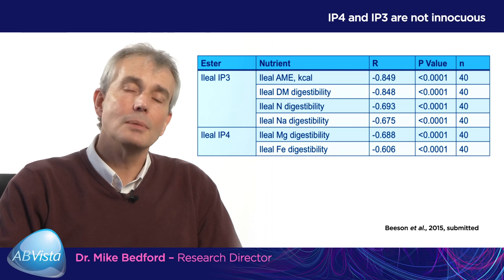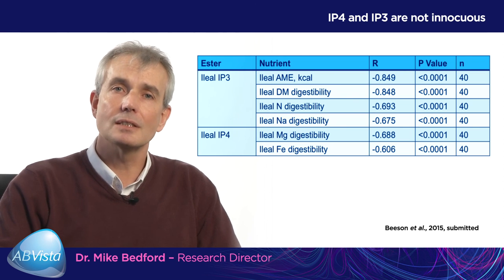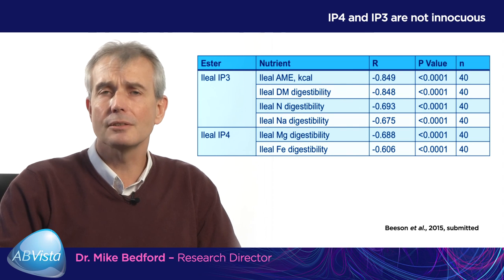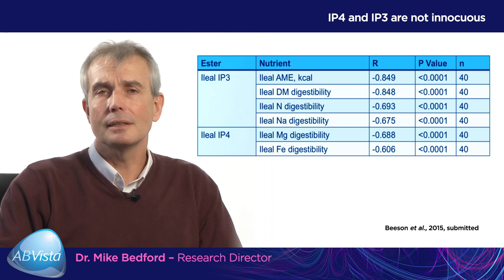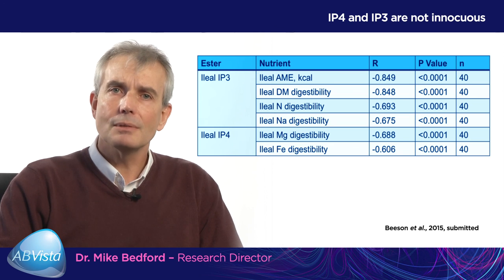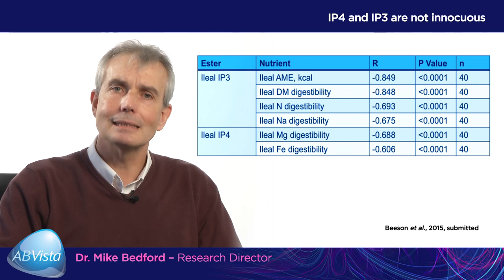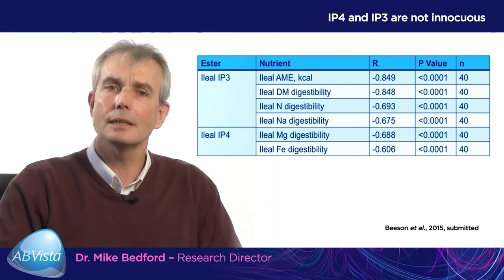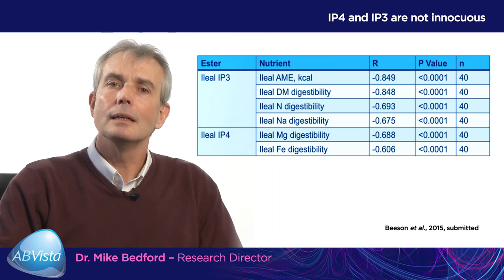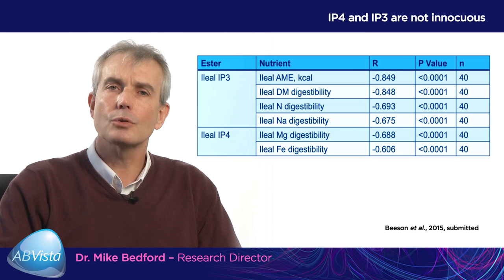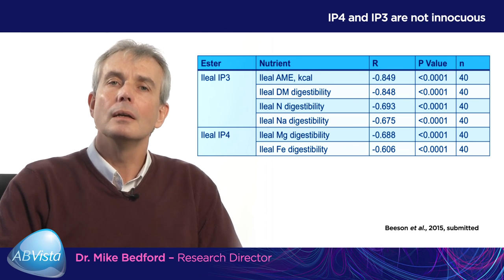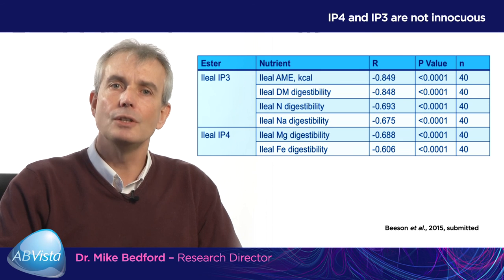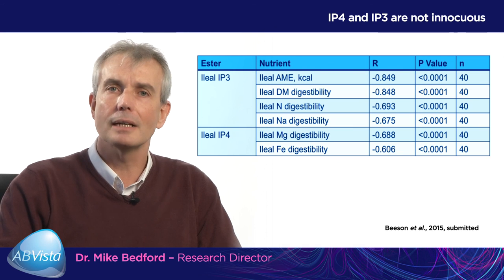How do we know IP3 and IP4 are involved in degrading the animal's ability to digest its feed? Recent data from 6 months ago shows that if you measure the concentration of IP4 and IP3 at the terminal ileum in birds fed various levels of phytase, there is a very negative correlation between the concentration of these esters and digestibility of energy, dry matter, nitrogen, sodium, magnesium and iron. The R values are incredibly high and very significant, which suggests that IP4 and IP3 really are quite malevolent esters in the digestive tract. They are not innocuous, and we have ignored these esters in the past with all of our research.